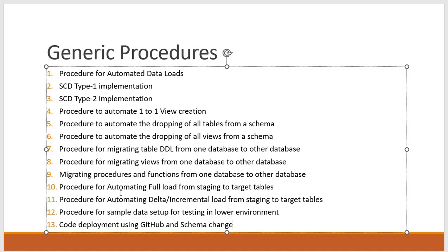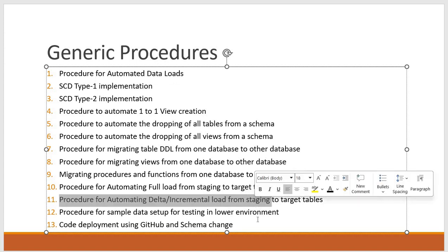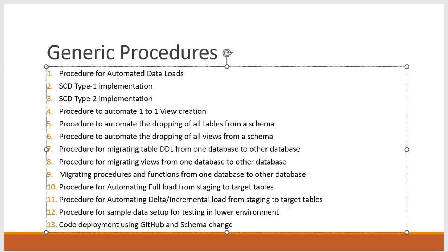Some of these procedures are very very important in real time — like SCD type 1 and type 2 implementations, the procedure for automating data loads, and the procedure for automating delta and incremental loads. These are very important and can be useful in each and every project that you will be working on. I will explain all these implementations that can be used in your real-time projects.